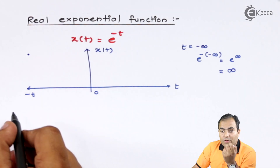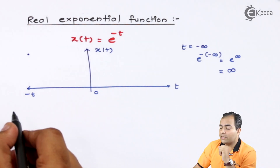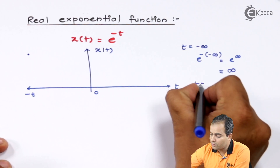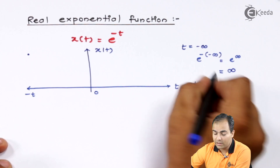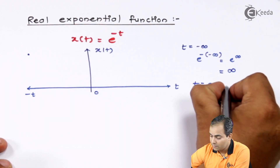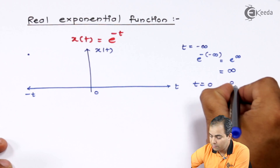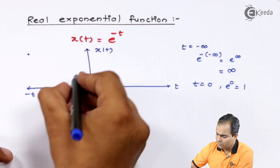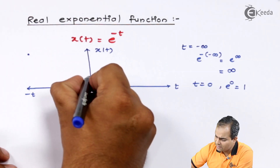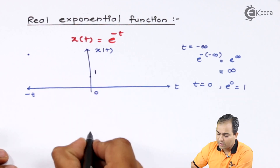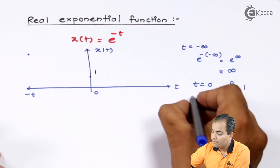For t equals to 0, if I substitute t equals to 0, this e to the power function will become e to the power 0, and e to the power 0 is always 1. So this is the value or position of amplitude 1.